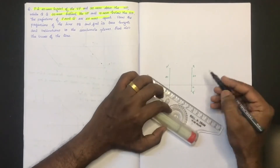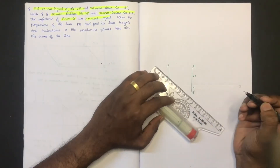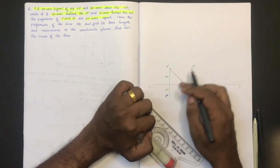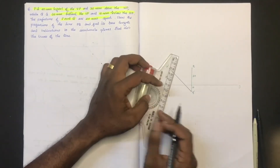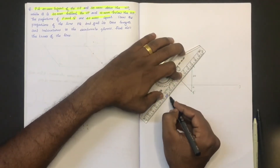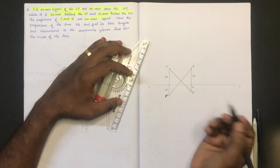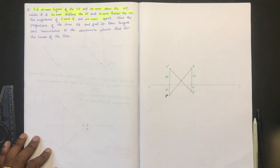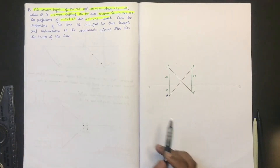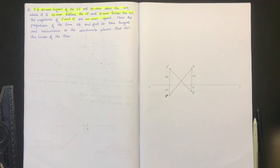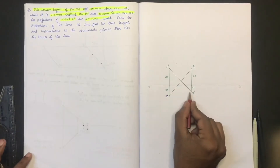We set up the plan and elevation. Q-dash is positioned accordingly. We draw the projections of the line PQ. We have already set the points. Now we find the true length using plain rotation method.